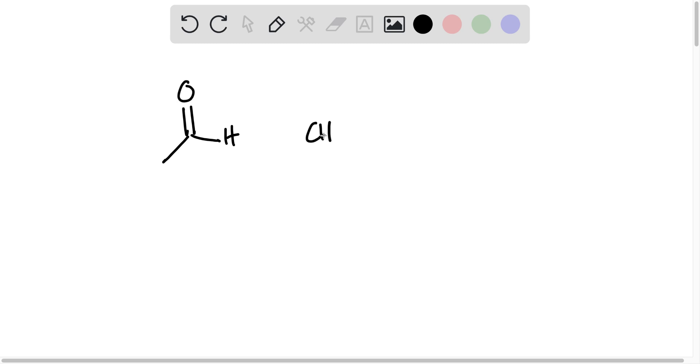You could also draw it CH3 COH. The important thing is that we need to indicate hybridization and bond angles around the carbon and the oxygen atoms in acetaldehyde.